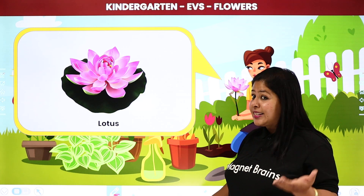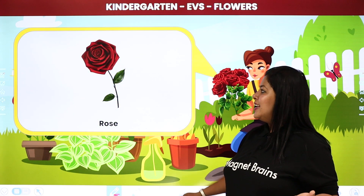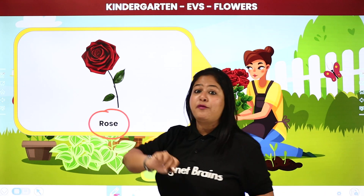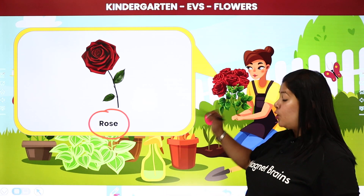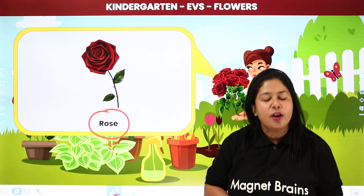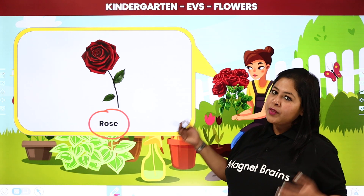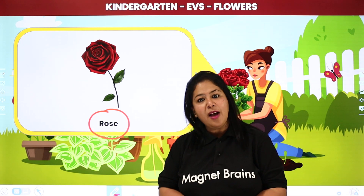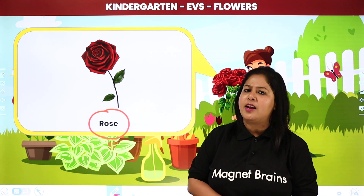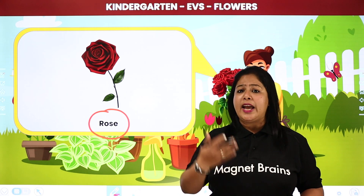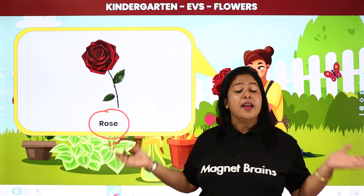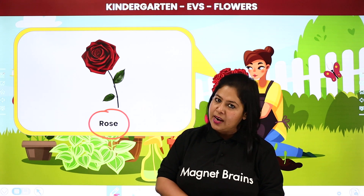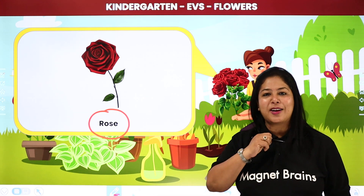Now let's see the next flower. This is which flower? Yes, this is rose — R-O-S-E. Gulab ka ful. It's a very common flower and a very beautiful flower. Roses are of different different colors — bahut saare color ke roses aate hain student. Red hai, pink hai, white hai — ye common colors hain. But roses yellow color ke bhi hote hain, orange color ke bhi hote hain. So this is rose — gulab ka ful.